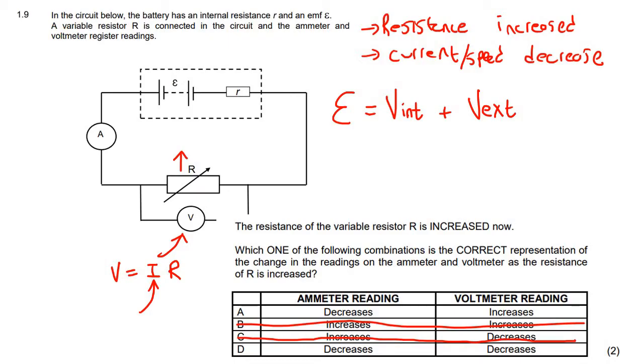The EMF is the combination of all the voltage that is done in the battery and all the voltage on the outside, which is called your external, or some teachers might call this terminal, and some teachers might even call this the lost volts. To calculate lost volts, we use IR.